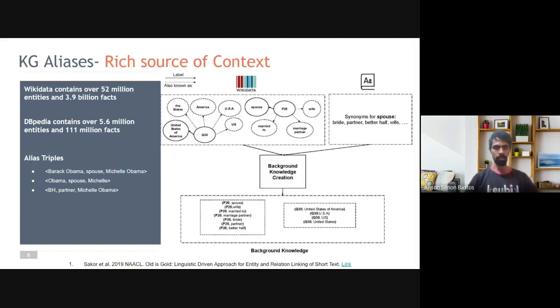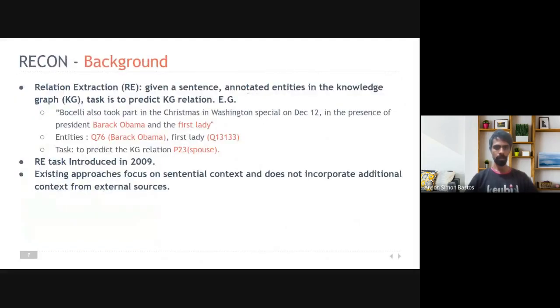KGs are a relation between entities, and we would like to see if such background knowledge could help in the task of relation extraction. The definition of a relation extraction task is given a sentence and the two entities in the sentence or a bag of sentences, we would like to predict what is the relation existing between them in the KG. For example, Bossili took part in Christmas in the presence of Barack Obama and the first lady. Here, the entities are Barack Obama and first lady. And the task is to predict the relation between them, which is that of a spouse. The RE task was introduced in the year 2009. Existing approaches focus more on getting information from the context in the sentence and do not consider incorporating additional KG sources.